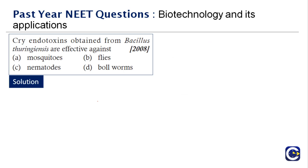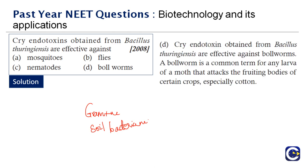Next question: cry endotoxins obtained from Bacillus thuringiensis are effective against — this is an easy question. As discussed, this gram-positive soil bacterium works on targeted pests. In the inactive form, when it reaches the intestinal gut, the pH activates the toxin, killing the pest. Cry endotoxins are effective against bollworms, which are larvae that attack fruiting bodies of crops like cotton. The right answer is option D.